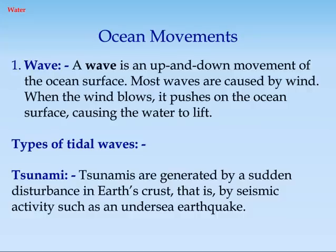Ocean movements. 1. A wave is an up and down movement of the ocean surface. Most waves are caused by wind. When the wind blows, it pushes on the ocean surface, causing the water to lift.